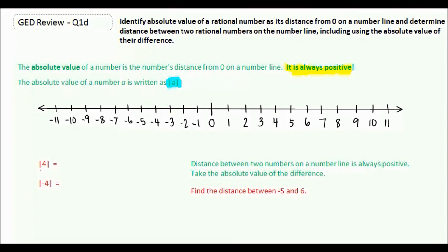So if we're looking at the absolute value of four, here's four, here's zero, that would be four spots away. So the absolute value of four is four.